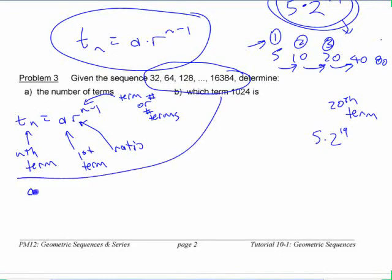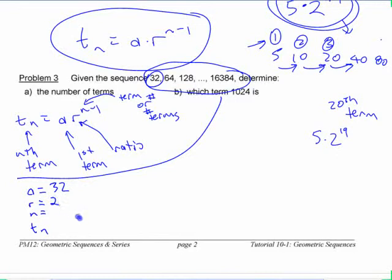So in this case, which of these things do you have? We have A. What's A here? A is 32 — the first term is 32. What's the ratio? If you're not sure what the ratio is, just divide any two terms. It's 2 here.